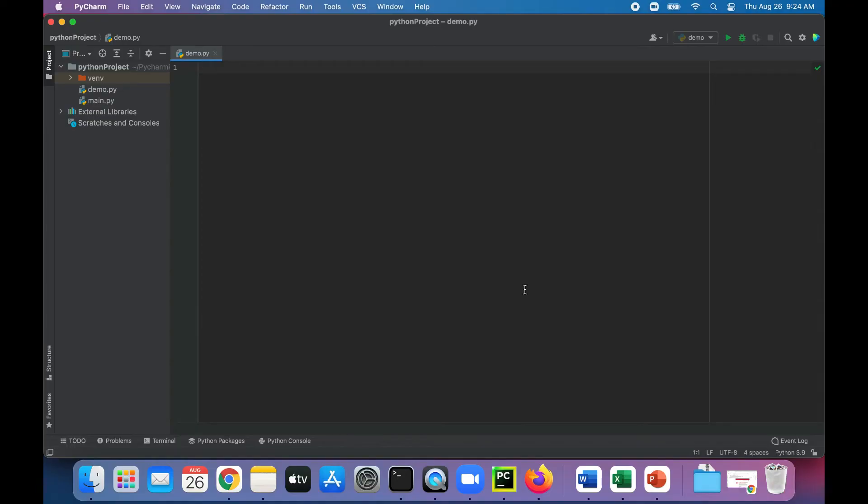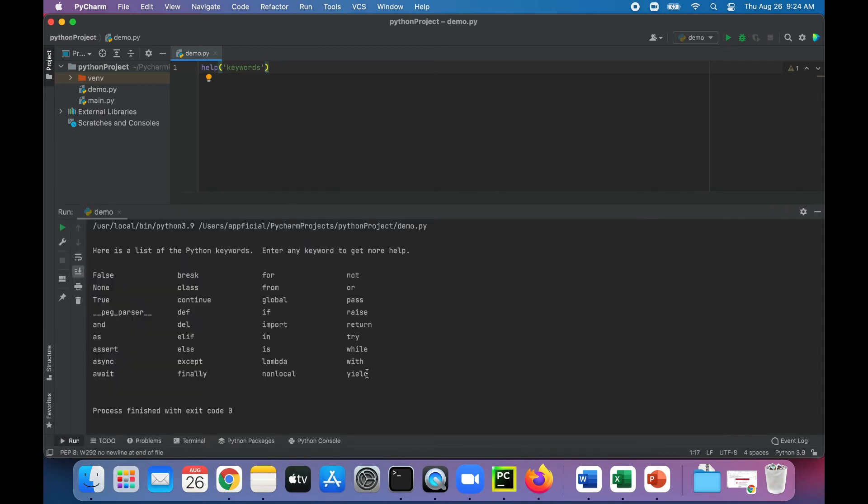I'm in the PyCharm IDE and you can see a list of all the keywords by simply typing help, parentheses, quotation marks or single quotes, keywords, and then just run the program, and there you go.